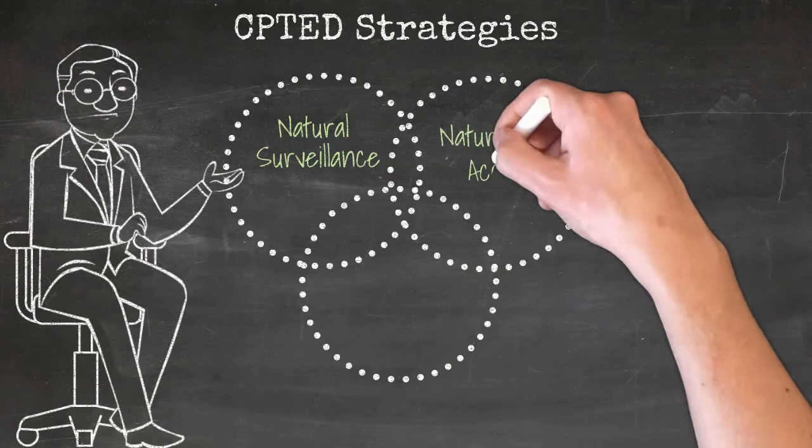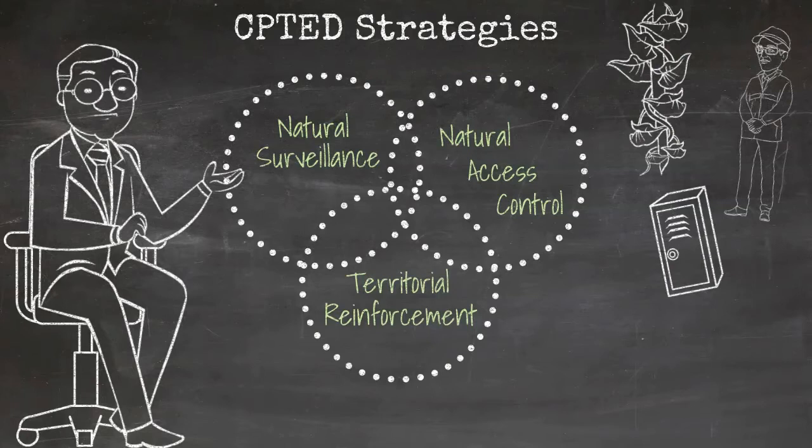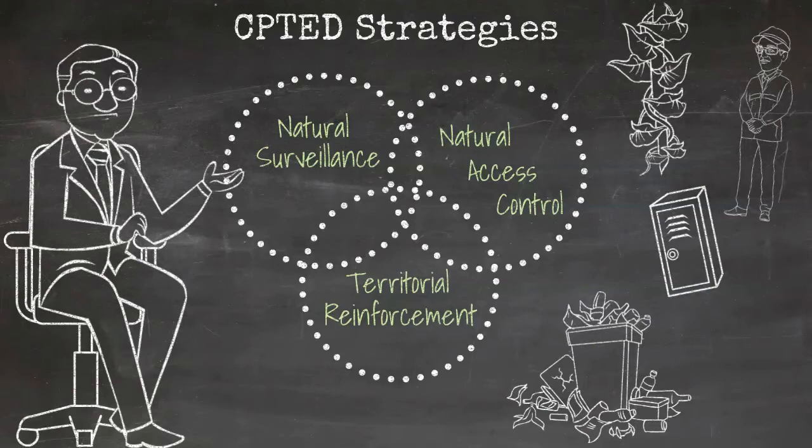Natural surveillance, natural access control, and territorial reinforcement. Opportunities for surveillance and access control can be achieved using tools that are natural, mechanical, or organized in nature. Crowe also asserted that the maintenance of a space and the image it projects are intertwined with these principles.